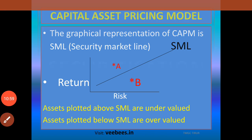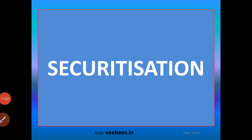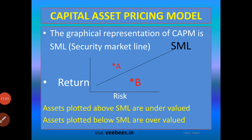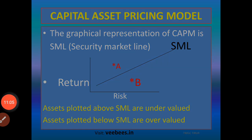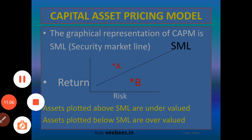To summarize: assets plotted above the SML are undervalued, and assets plotted below the SML are overvalued. These are the key concepts regarding the Capital Asset Pricing Model. Thank you very much.